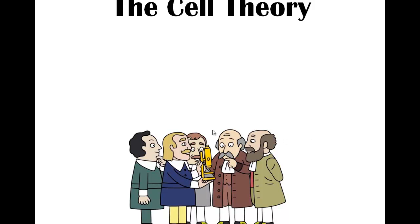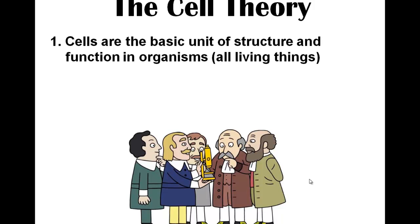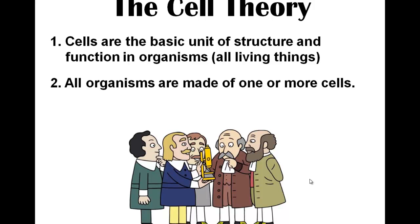Cell theory. Here are the actual scientists we just talked about — you can hazard a guess as to which one's which. The cell theory says that cells are the basic unit of structure and function in all living things. All organisms are made of one or more cells — it doesn't matter if they're single-celled or multi-celled, or when in time they existed. Life is made out of cells. We have multi-celled creatures, but far more creatures are actually single-celled, like bacteria, which makes up probably more biomass than all other life combined.